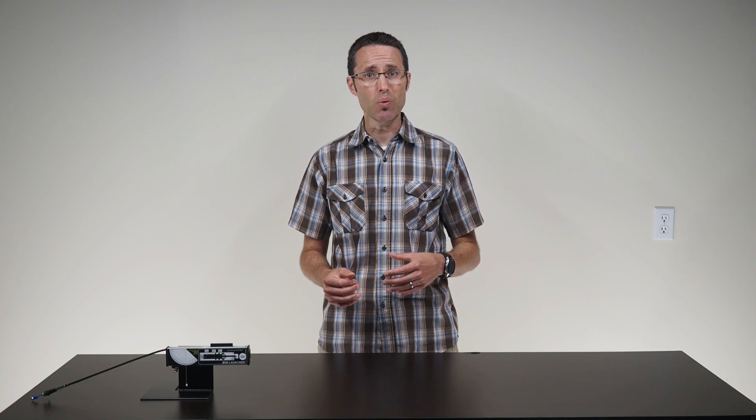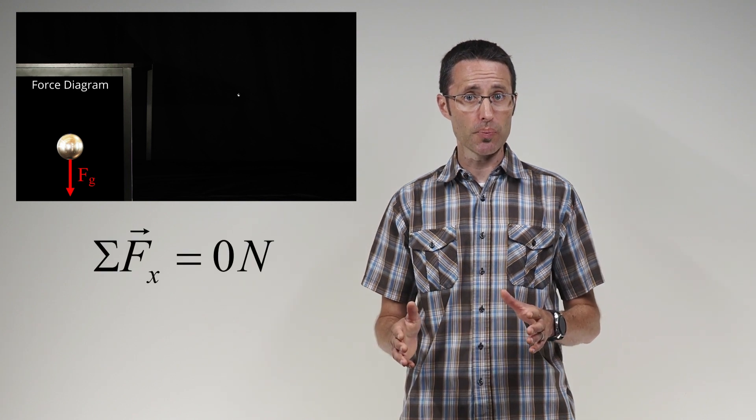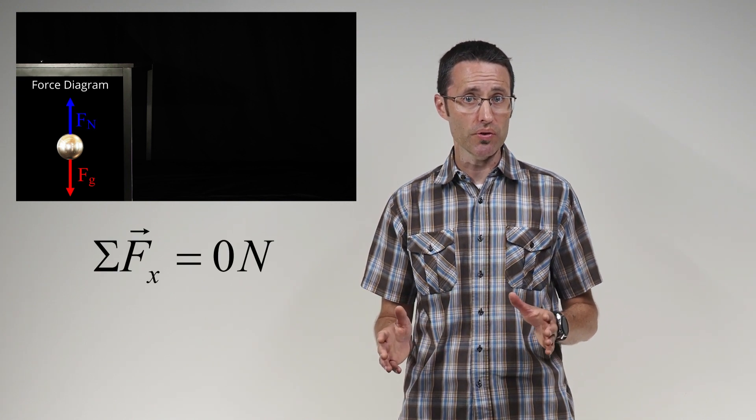After further discussion, the class should reach a consensus that while on the table, the ball only experiences the gravitational force pulling down and the normal force pushing up. These two forces are balanced, and the sum of the forces on the ball is zero, since the ball has no significant acceleration. The class should reach a consensus that while off the table, the ball only experiences the gravitational force pulling down. In both cases, the ball experiences no significant horizontal forces, so the ball shouldn't experience a change in its horizontal velocity.